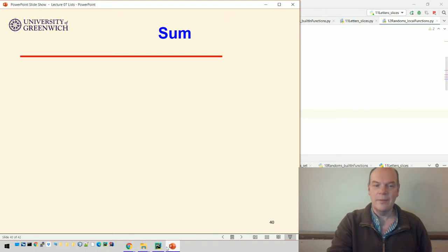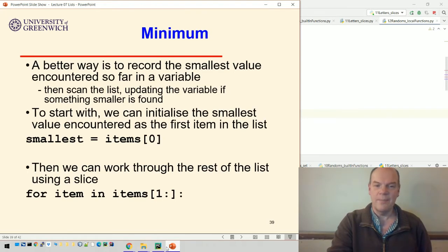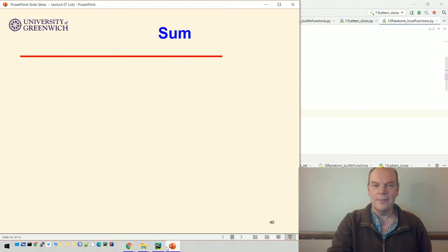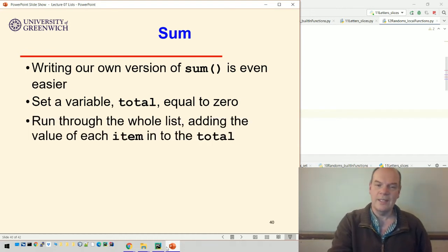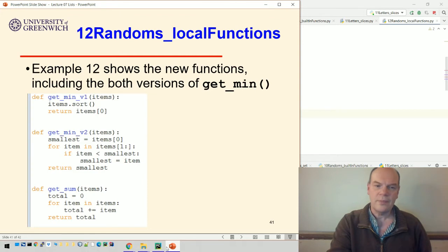The maximum incidentally is almost exactly the same, except you're looking for the largest one. And for the sum, we just set a value total to be equal to zero. And we run through the list, adding the value of each item to the total. So there's the code.